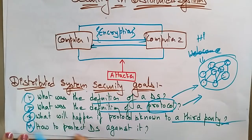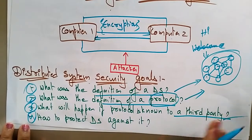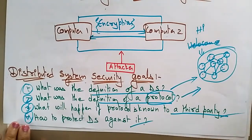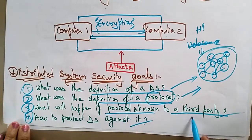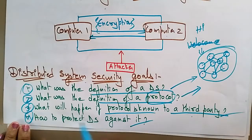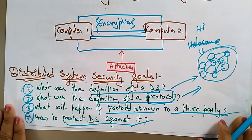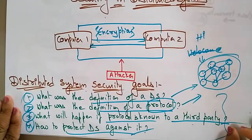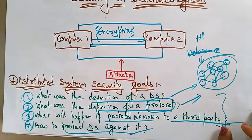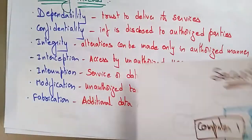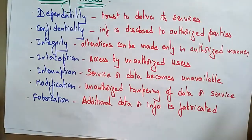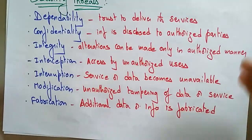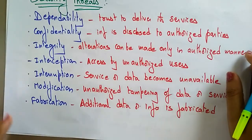The fourth goal of distributed system security is how to protect the distributed system if an attack occurs and the protocol is known by a third party. These are the different goals of distributed system security that we have to sort out if you want to implement and maintain security in a distributed system.